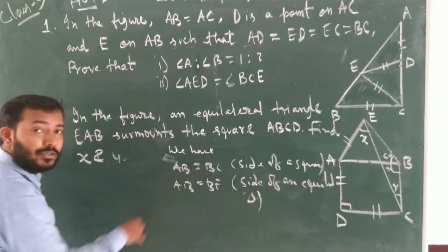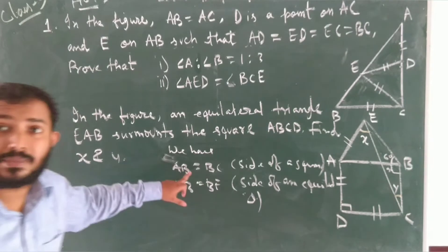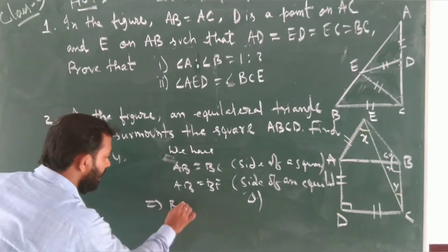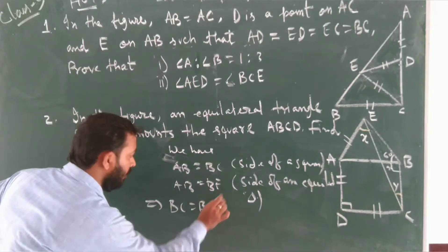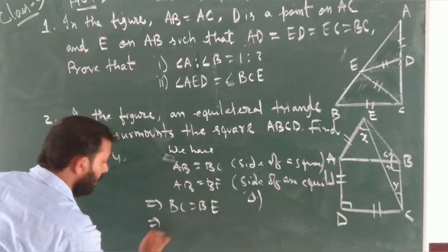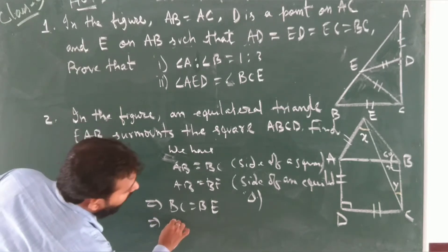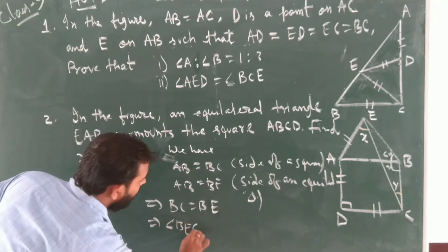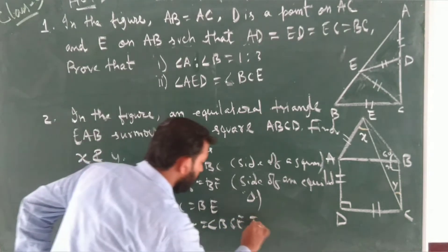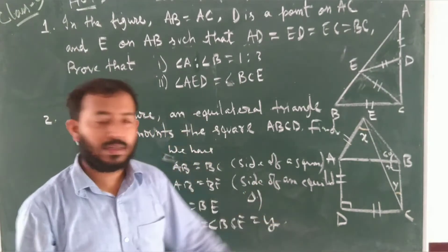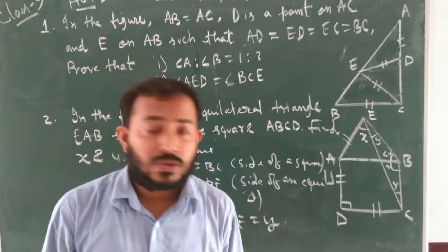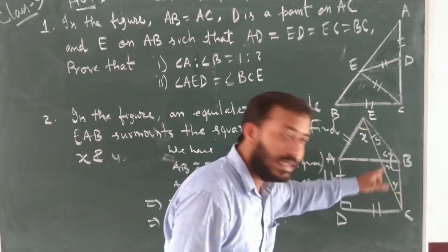From steps one and two, things which are equal to the same thing are equal to one another — Euclid's axiom applies here. So BC equals BE, and in triangle BCE we get angle BEC equals angle BCE, and each equals Y.